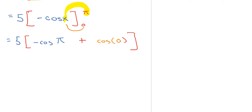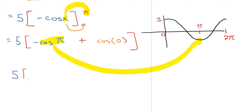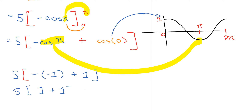Now you need to evaluate this expression to get your final answer. The graph of cos x shows that at x = 0 the height is 1, and at x = π the value is negative 1. So cos(π) = −1 and cos(0) = 1. That gives 5 times [−(−1) + 1] = 5 times [1 + 1] = 5 times 2 = 10. So the area accumulated underneath the graph from 0 to 5π has a value of 10.